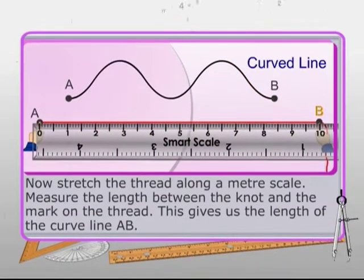First, make a mark on the thread where it touches the end B. Now, stretch the thread along a meter scale. Measure the length between the knot and the mark on the thread. This gives us the length of the curved line AB.